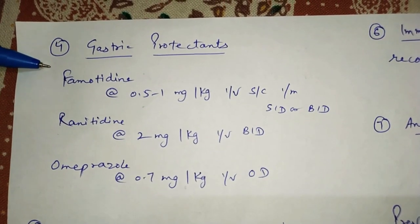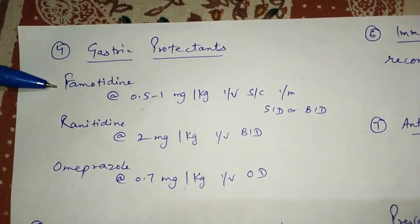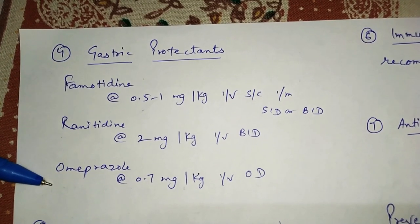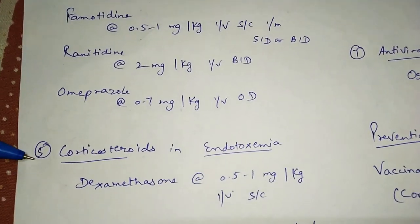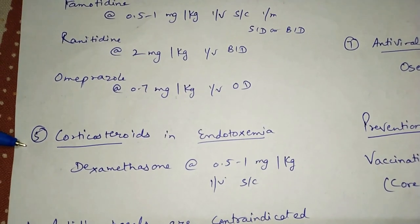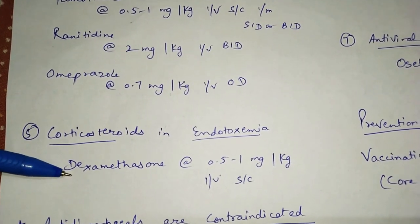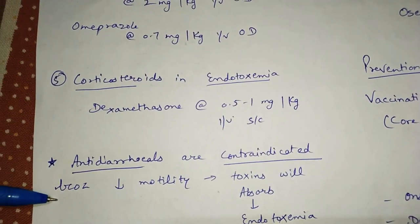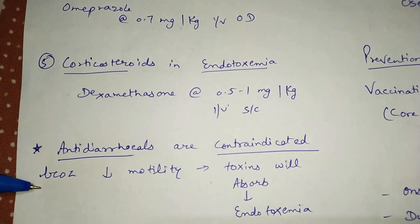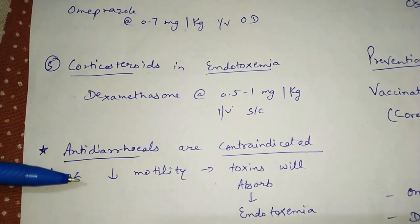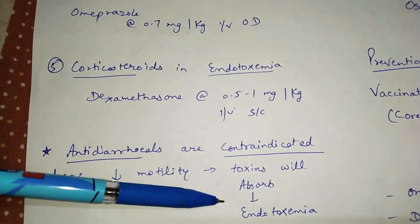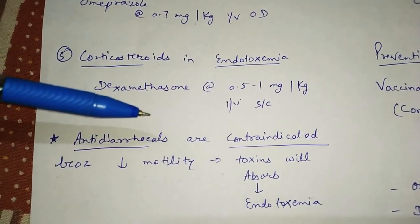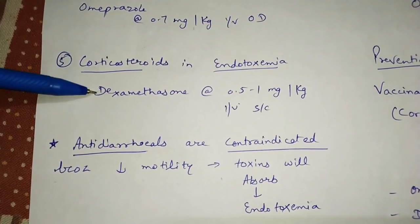Gastric protectants include famotidine 0.5–1 mg/kg, ranitidine 2 mg/kg, and omeprazole 0.7 mg/kg. Corticosteroids are useful in endotoxemia or endotoxic shock — dexamethasone at 0.5–1 mg/kg IV or subcutaneous. Importantly, antidiarrheal drugs are contraindicated because they decrease motility, allowing toxin absorption and worsening endotoxemia. If endotoxic shock occurs, dexamethasone should be given.